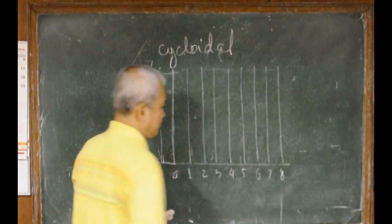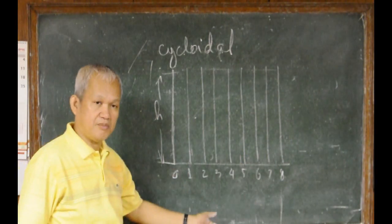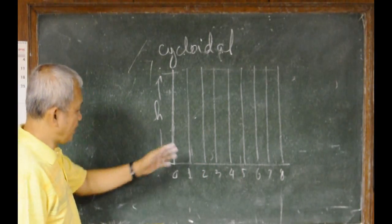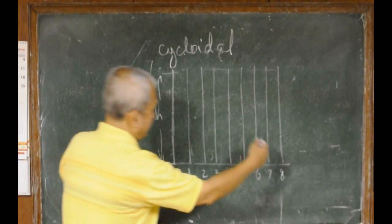The division of the total time can be 8 or it can be any number of divisions. For our purpose, we will be using 8 divisions of the time.